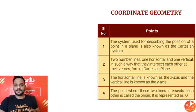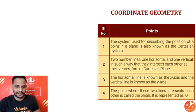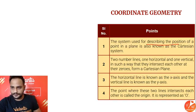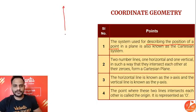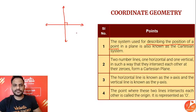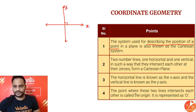Starting with coordinate geometry — it is a system used for describing the position of a point in a plane. Two number lines, one horizontal and one vertical, intersect to form a Cartesian plane. These two lines are perpendicular to each other. The horizontal line is the x-axis and the vertical line is the y-axis.